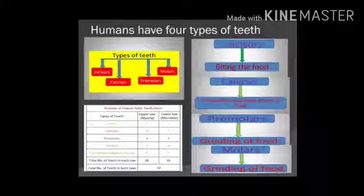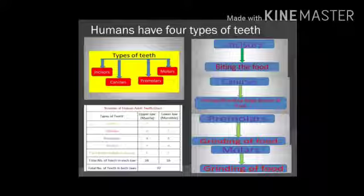Humans have four types of teeth: incisors, canines, premolars, and molars. Incisors are chisel-shaped; there are eight incisors — four in the upper jaw and four in the lower jaw — and they help in cutting and biting the food. Canines are sharp or pointed teeth; they help in tearing the food and there are four canines — two in the upper and two in the lower jaw. Premolars are broad teeth that help in grinding the food, and there are eight premolars. Molars also help in grinding — there are twelve molars, six each in the upper and lower jaw.